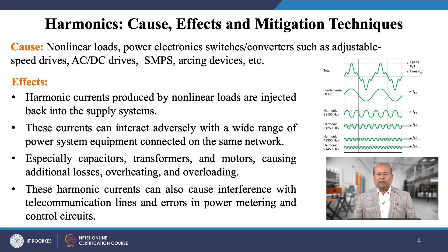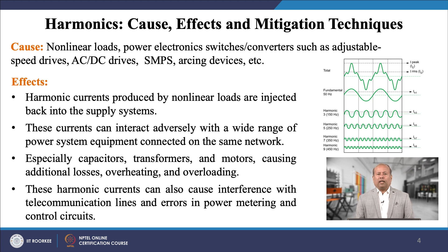You can see an example in the given figure. The fundamental component of current is at 50 Hz, and subsequent harmonic components of the 3rd, 5th, 7th, and 11th are also present. The resultant current waveform is distorted. For the sake of understanding, if we take a square wave it will produce close to 48.3 percent deviation from the ideal sinusoidal waveform — that is THD equal to 48.3 percent.